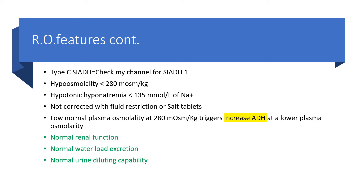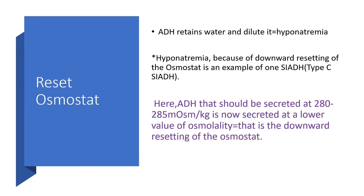There will be normal water load excretion and normal urine diluting capability. ADH will retain water and dilute it, and then we'll have hyponatremia. Hyponatremia here is because we're dealing with downward resetting of the osmostat, which is one type of syndrome of inappropriate antidiuretic hormone — specifically type C. ADH that should be secreted between 280 to 285 milliosmol per kg is now secreted at a lower value, and that is what we term the downward resetting of the osmostat.